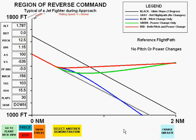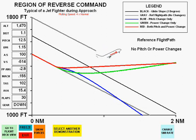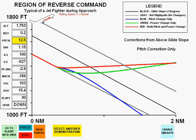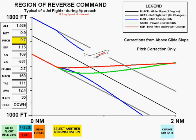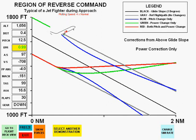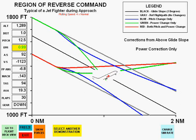We will now repeat the plot from above the glide slope. Again, the first plot is parallel to the glide slope with no pitch or power changes. As before, the change in pitch initially goes toward the glide slope, but then deteriorates in its interception and ends up deviating away — in this case above the glide slope. The change in power does make a change toward the glide slope, although initially not quite as fast as pitch alone.